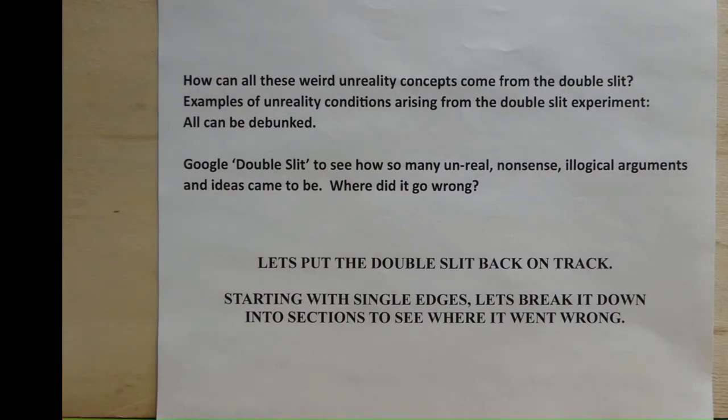How can all these weird unreality concepts come from the double-slit? Examples of unreality conditions arriving from the double-slit all can be debunked. Google double-slit to see how many unreal nonsense illogical arguments and ideas came to be. Where did it go wrong? Let's put the double-slit back on track, starting with single edges. Let's break it down into sections to see where it went wrong.